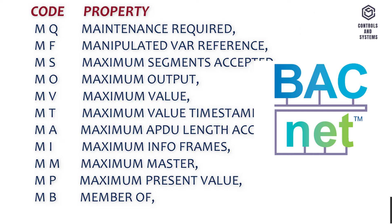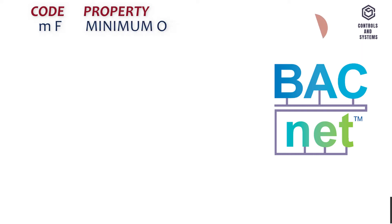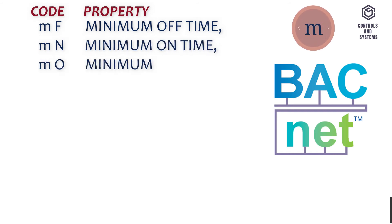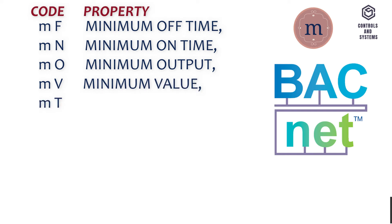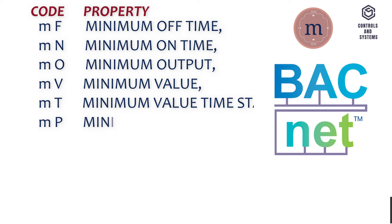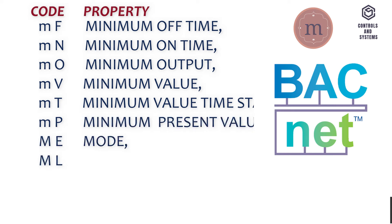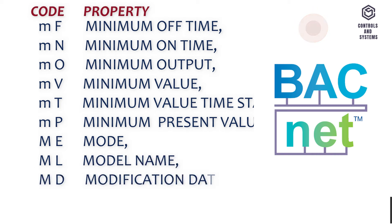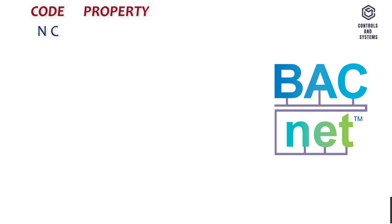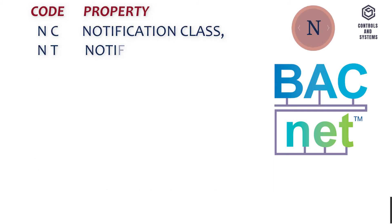C-M-F - Member Of, C-M-N - Minimum Off Time, C-M-M-O - Minimum On Time, C-M-V - Minimum Output, C-M-T - Minimum Value, C-M-P - Minimum Value Timestamp, C-M-E - Minimum Present Value, C-M-L - Mode, C-M-D - Model Name, C-M-C - Modification Date, C-M-N-T - Notification Class.